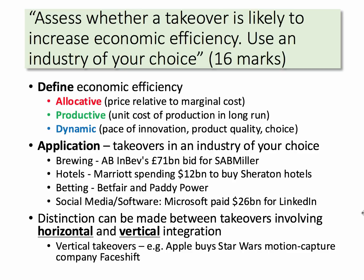It'll be important in this answer to have a good industry of your choice — you can use more than one if you want, but it's always good to have one in particular. Some examples: AB InBev's takeover of SABMiller in the brewing industry, big takeovers in hotels, horizontal integration in betting, and the huge Microsoft acquisition of LinkedIn for twenty-six billion dollars. You can also make a distinction between horizontal and vertical integration. Vertical integration is where you buy businesses at a different stage of the supply chain — a good example being Apple buying the motion-capture company FaceShift.